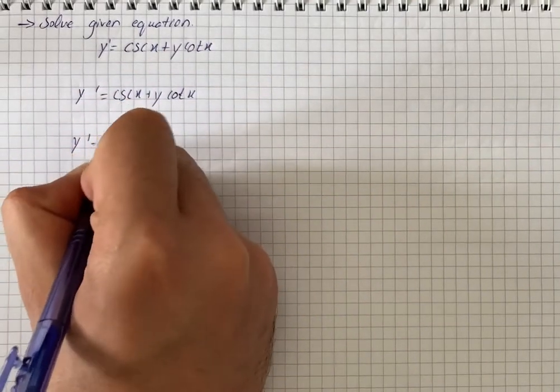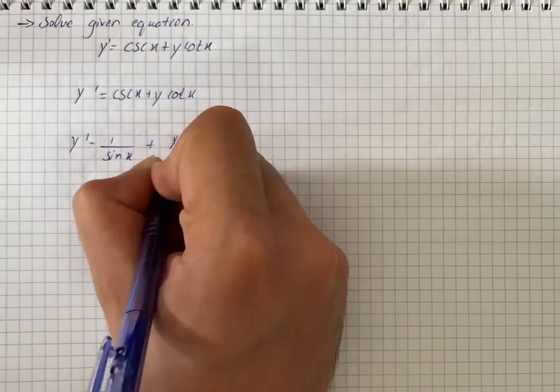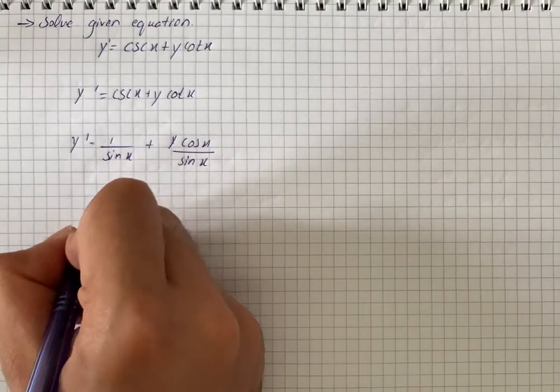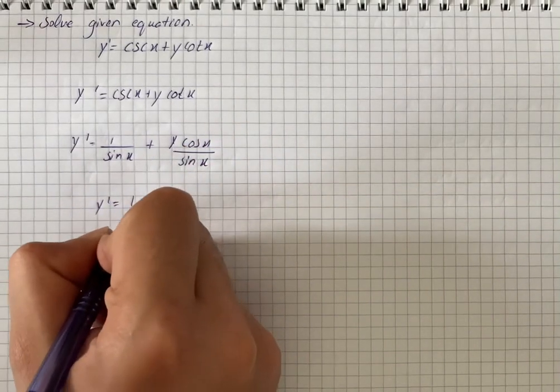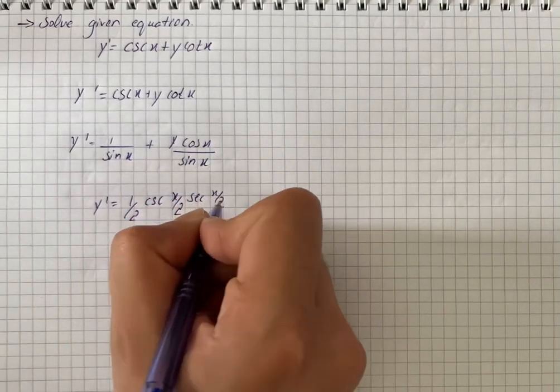We can write this as 1 over sin x plus y into cos x divided by sin x. On simplification, it will give us y prime is equal to 1 by 2 csc x by 2 into sec x by 2.